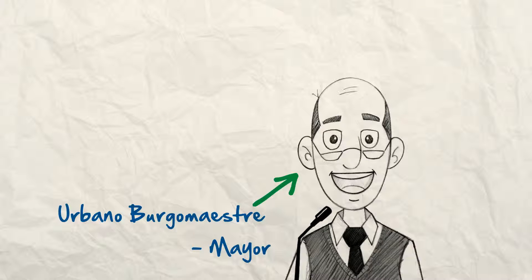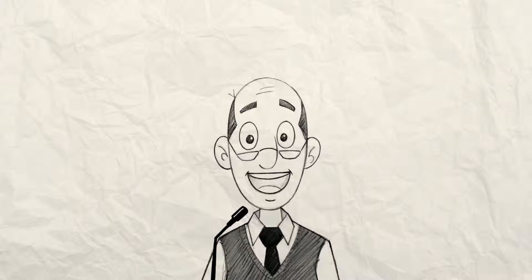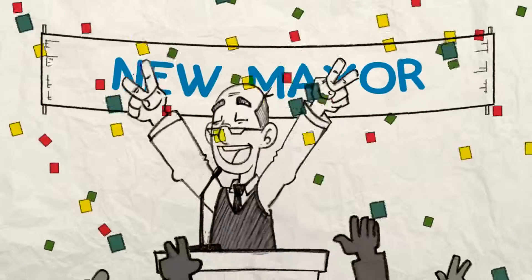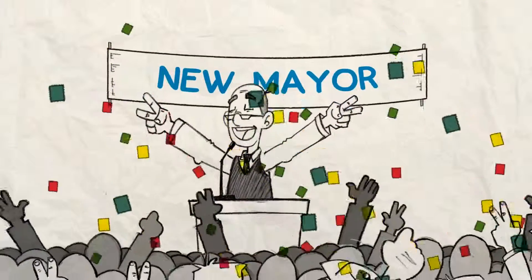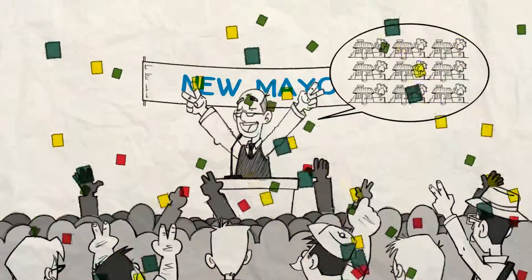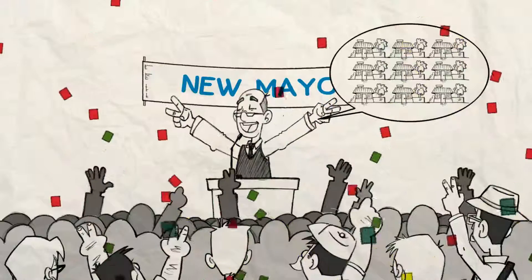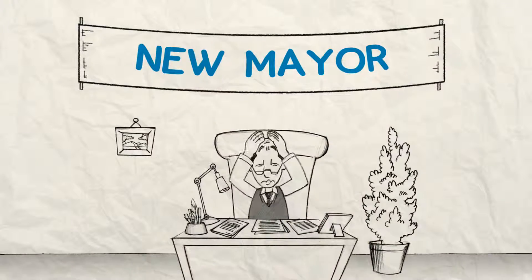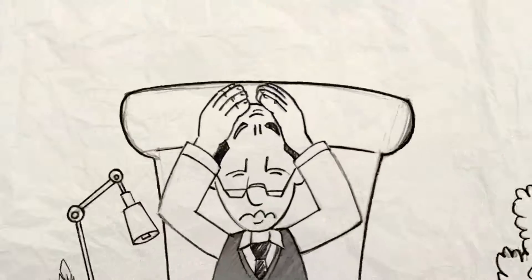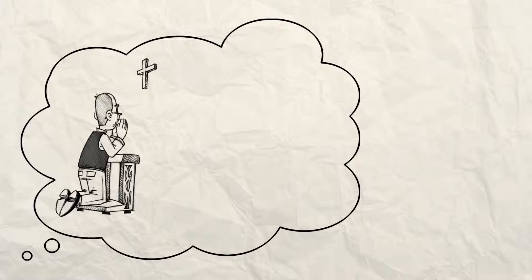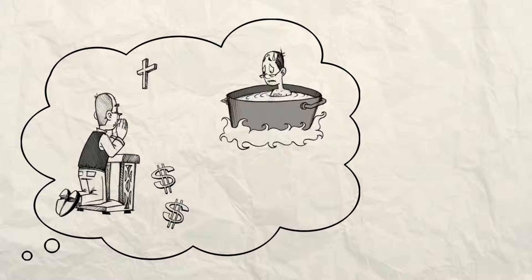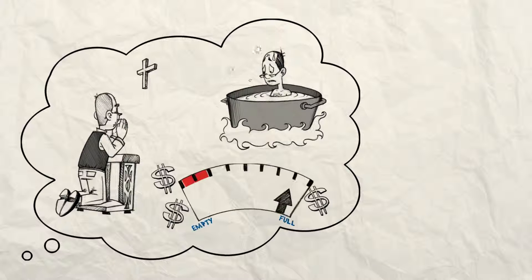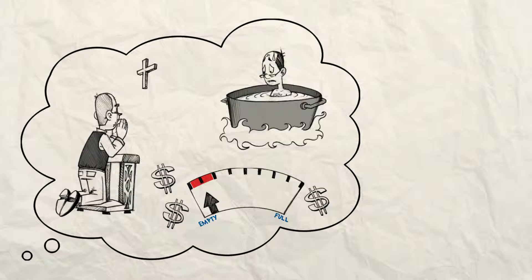Urbano Burgomaster is one of the thousands of mayors in Colombia. He promised his electors a lot of social housing solutions for people who live in his municipality. Behind his desk, he thinks: what will I do? Who can help me? How much will this cost? Where will I get the money? After all, this municipality subsists with just the minimum.